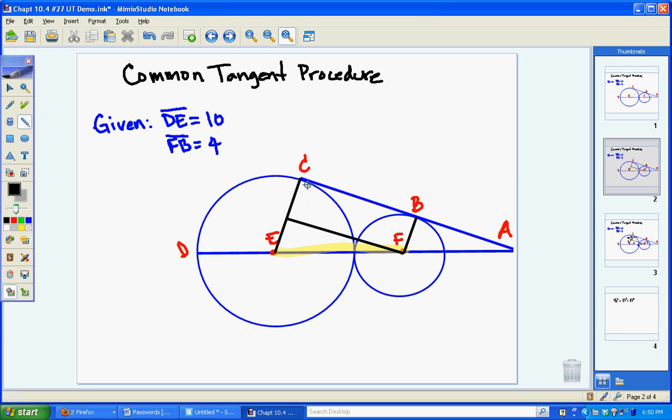So now what I've done is I've created a rectangle from C to B to F to what I'm going to call point T. So now I know CBFT is a rectangle because I know that the radii intersect the tangent at right angles and on purpose I've drawn a line that's parallel to AC so I know that these angles are right angles as well.